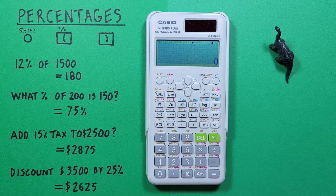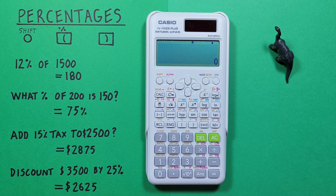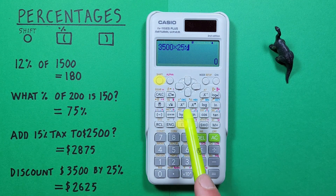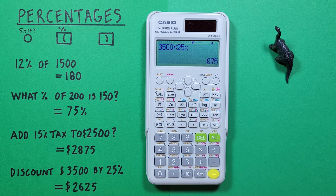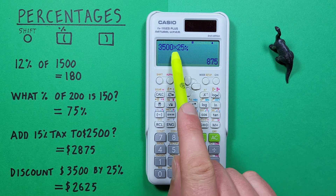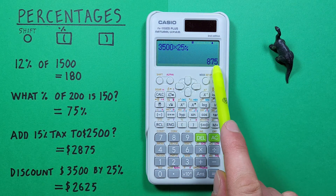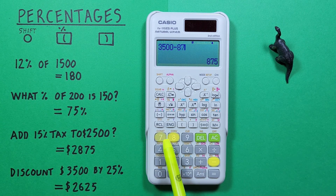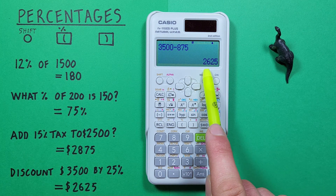We can also use this to determine discounts. Let's say there was an item that originally cost $3,500 but was discounted by 25%. What would be the final cost? We start by entering the initial cost: 3500 times 25% and press equals. We get 875, so 25% of 3500 is 875 — that's our discount. Then we go 3500 minus 875 equals and we get a final cost after discount of 2625.